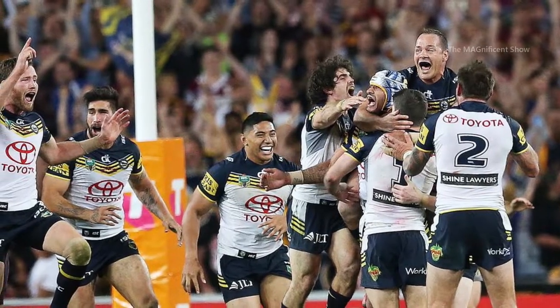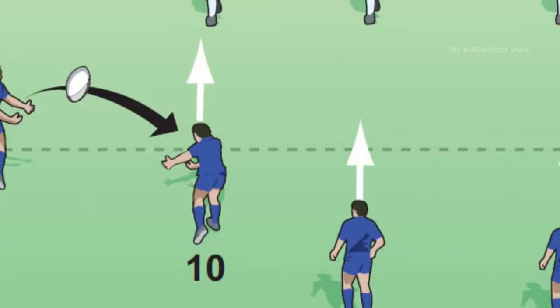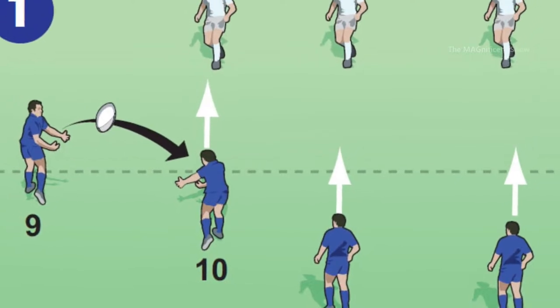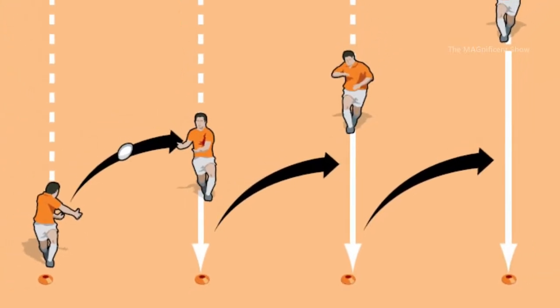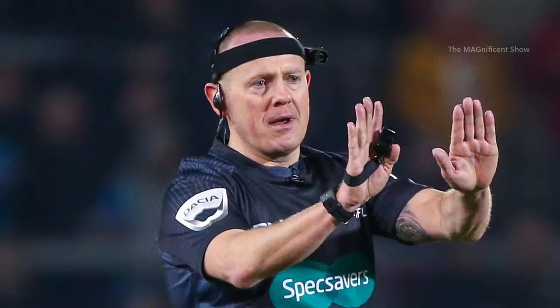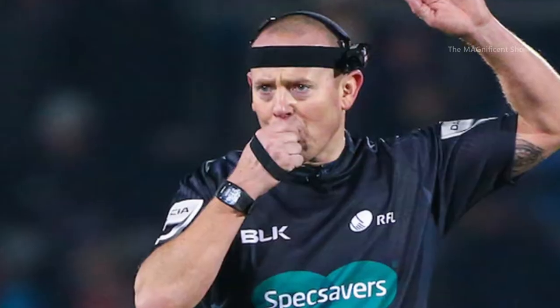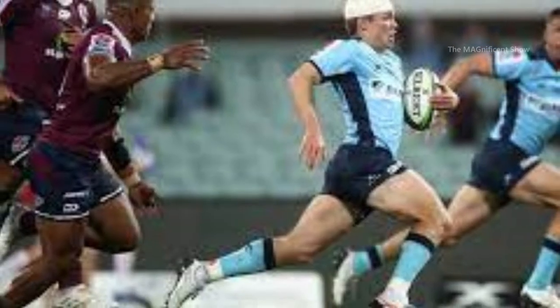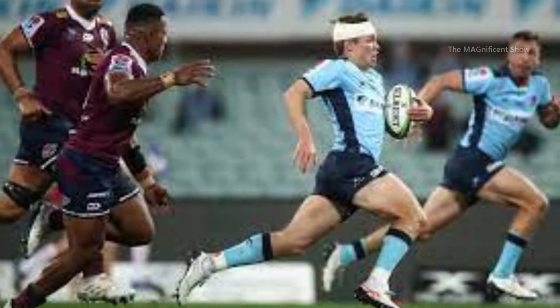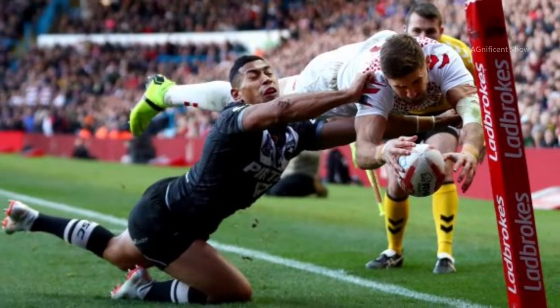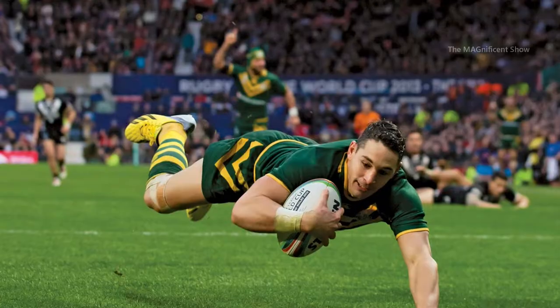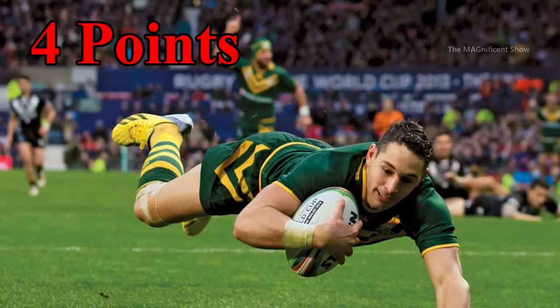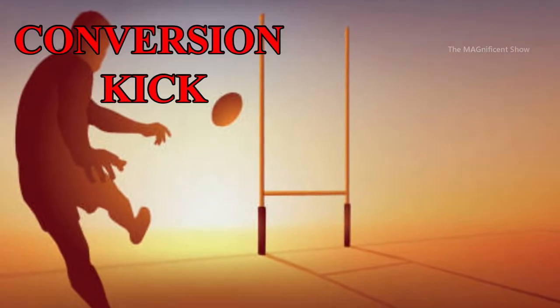In rugby, a player can kick the ball forward or run with the ball forward, but cannot pass the ball forward. A team can score points in many ways. The first is called a try — a team can run with the ball into the opponent's in-goal area and place the ball down on the ground. If they do this successfully, that is a try and they score four points.